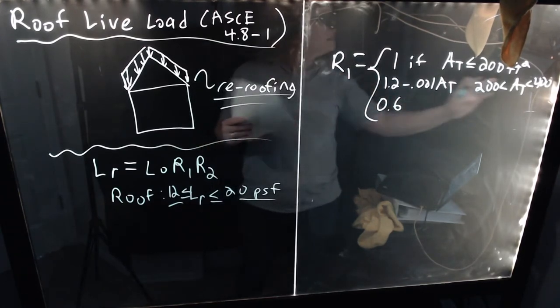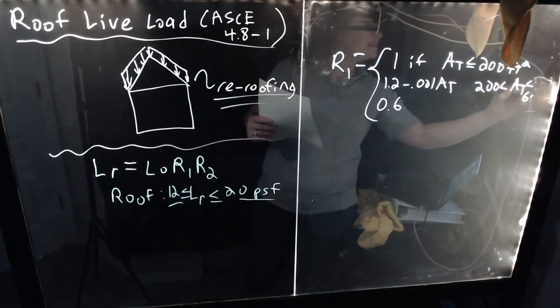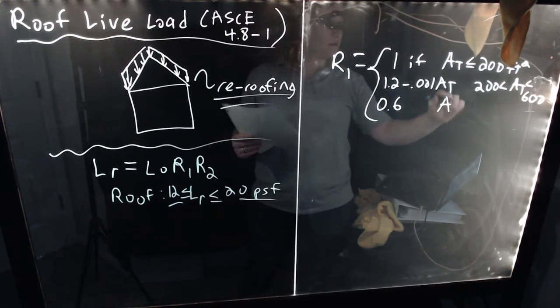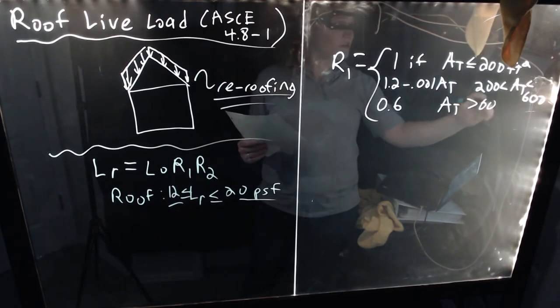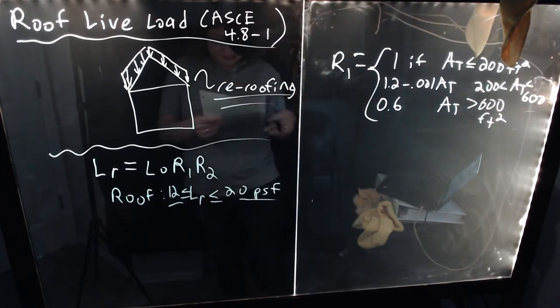Like so. And then it will finally just be equal to 0.6 if AT is greater than 600. So that should be 400, that should be 600. Less than 600, and 0.6 if AT is greater than 600, and all of these, of course, in square feet, because we're using freedom units here.